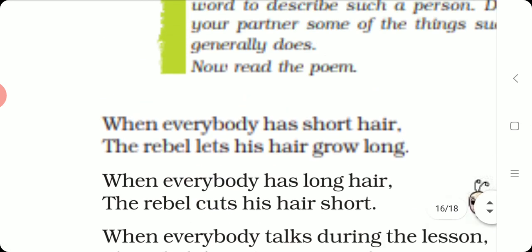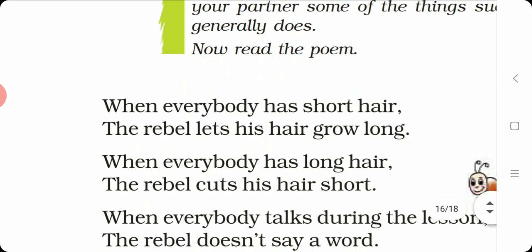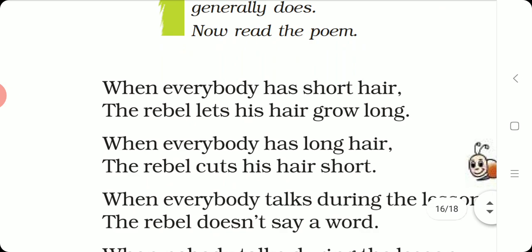Now let us go to the poem line by line. When everybody has short hair, the rebel lets his hair grow long. Suppose this is a fashion that everybody is wearing short hair — the rebel lets his hair grow long, his hair will be long. It is just the opposite. When everybody has long hair, the rebel cuts his hair short. So, when it is a fashion to have long hair, the rebel will have short hair.